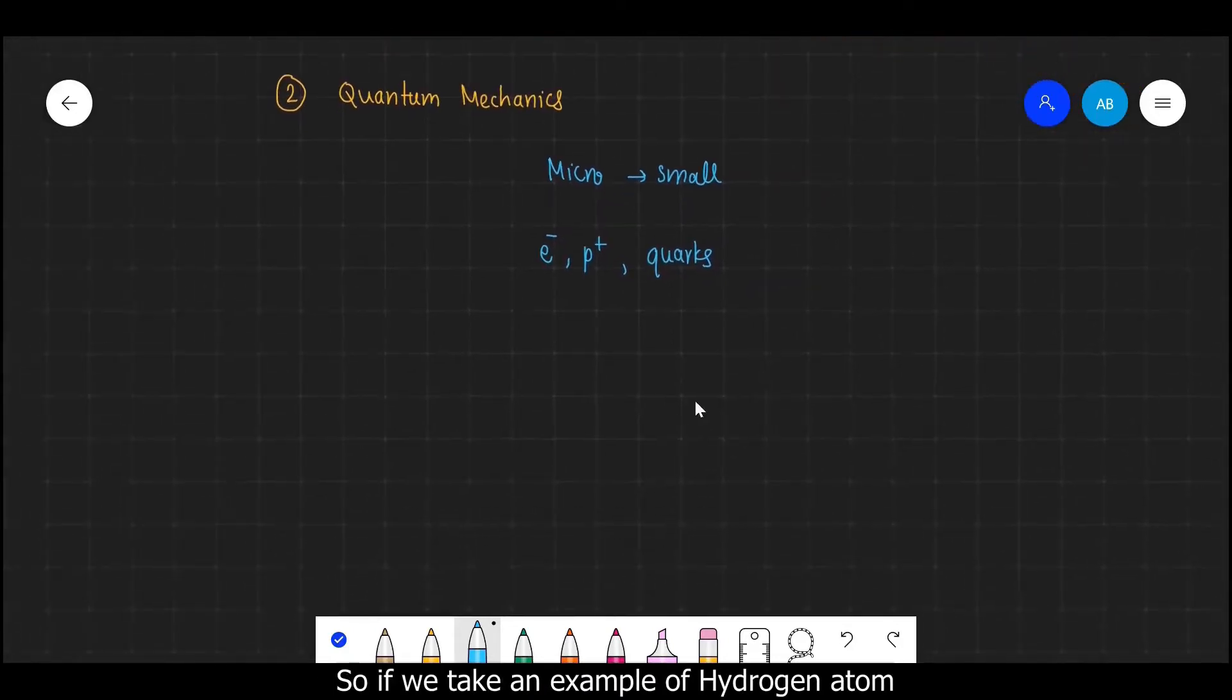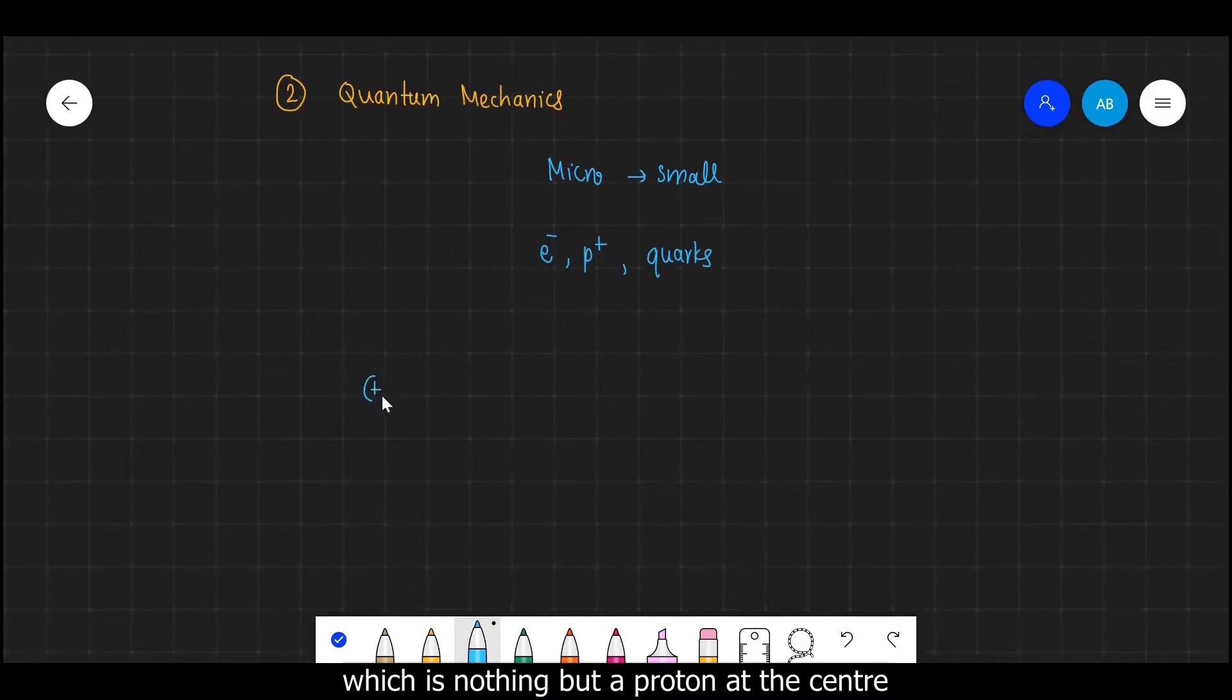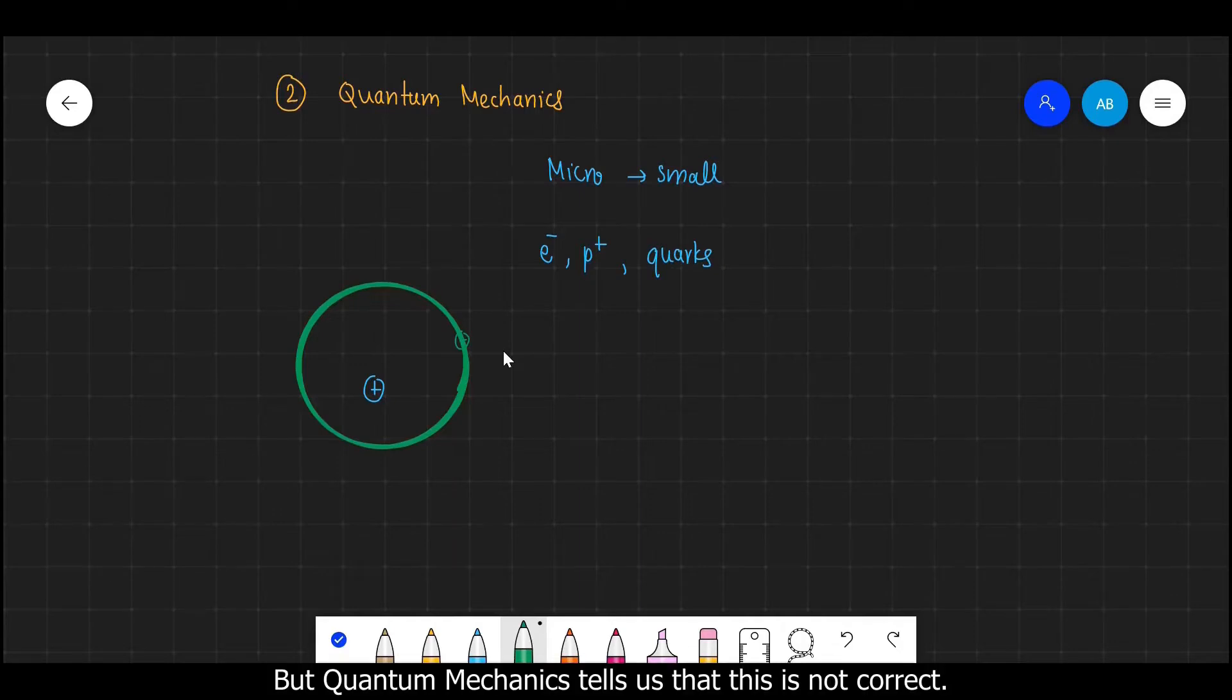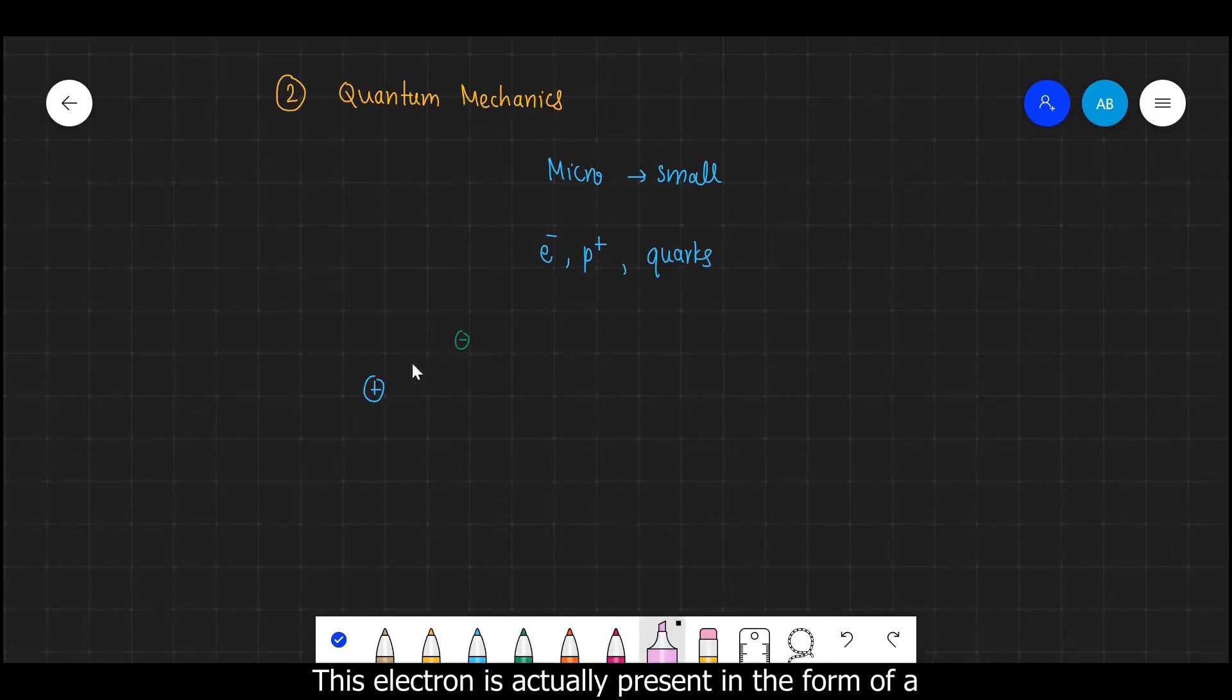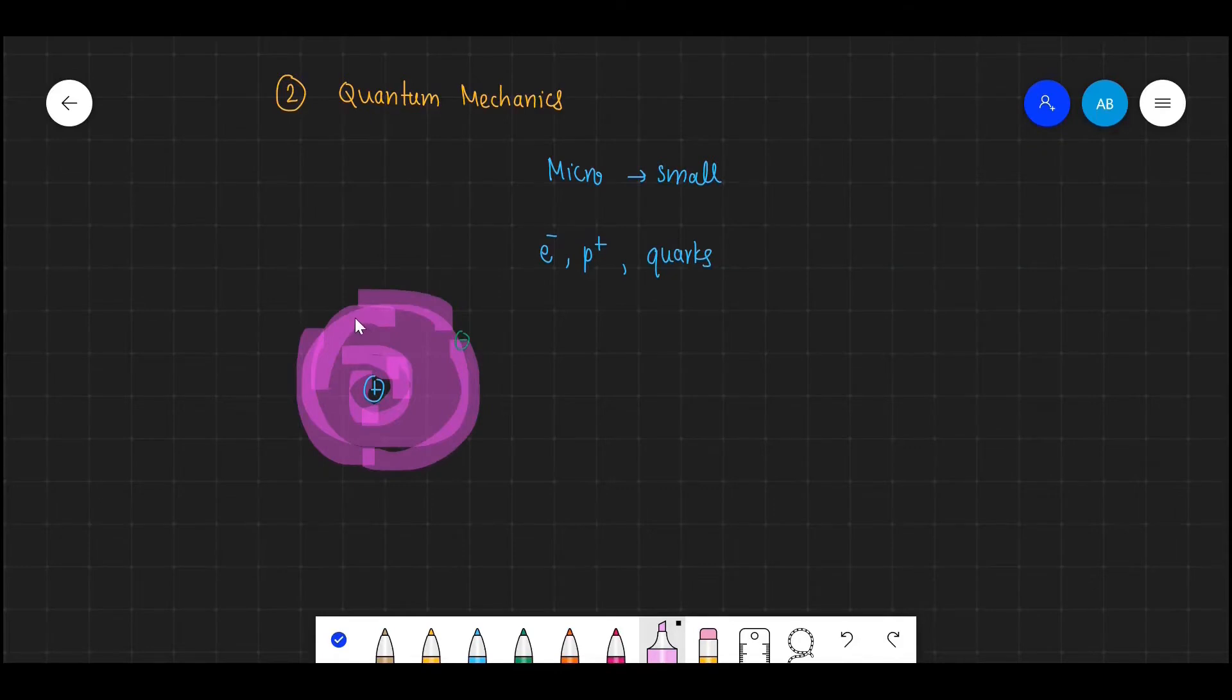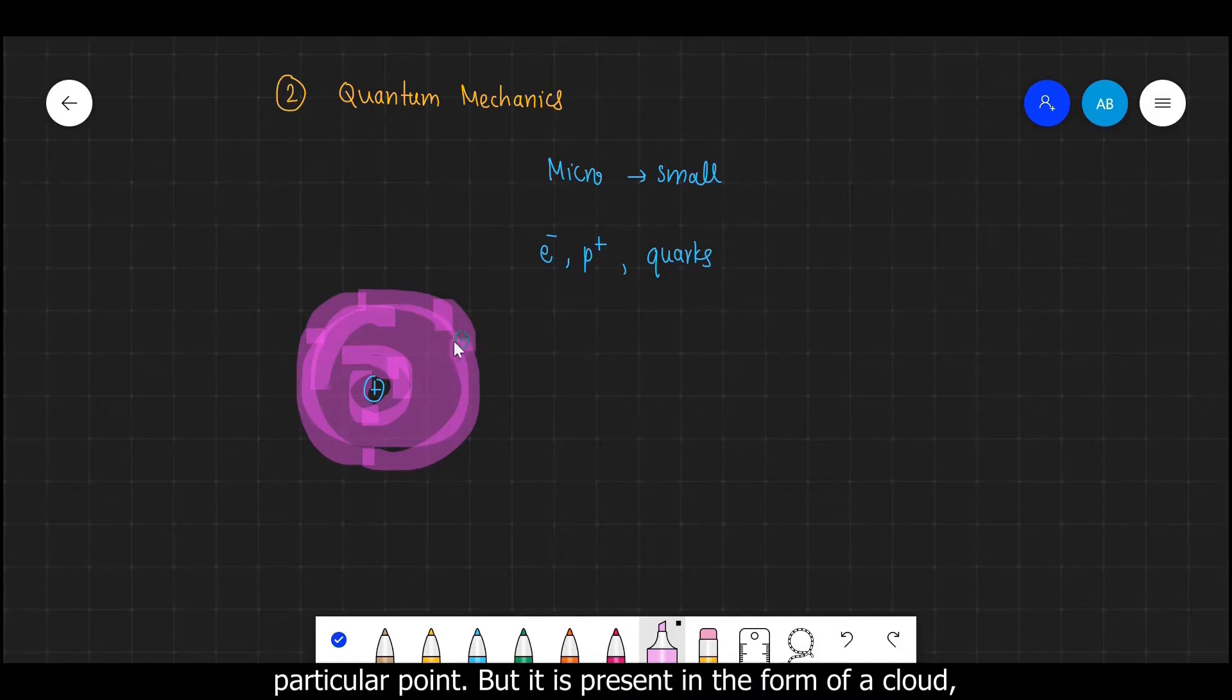So if we take an example of hydrogen atom, which is nothing but a proton at the center and then an electron going around it like this. So naturally we will think that this electron must be going around this proton in some orbit with a specific radius. But quantum mechanics tells us that this is not correct. This electron is actually present in the form of a cloud, which is called an electron cloud. So this electron is not present at this particular point, but it is present in the form of a cloud which is everywhere around it.